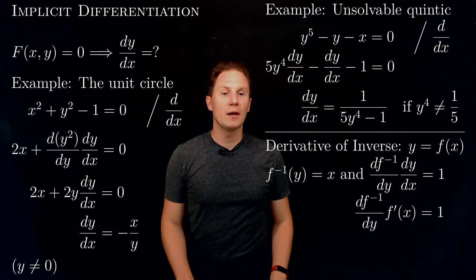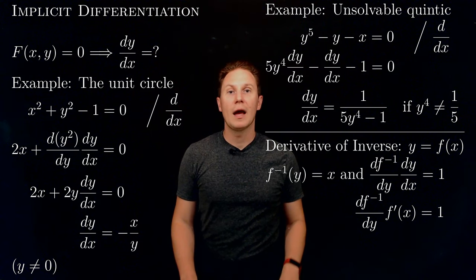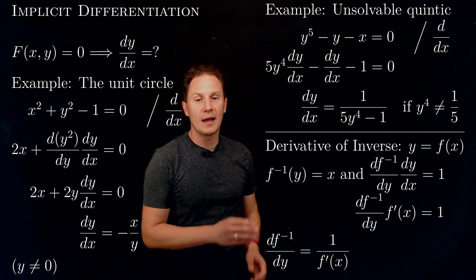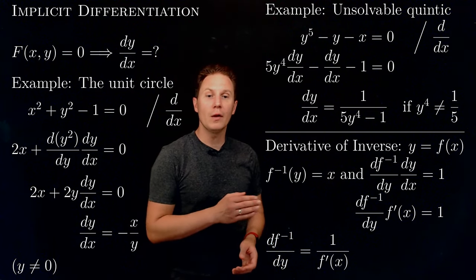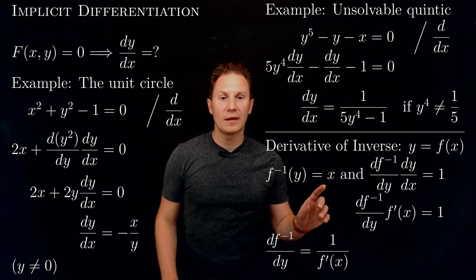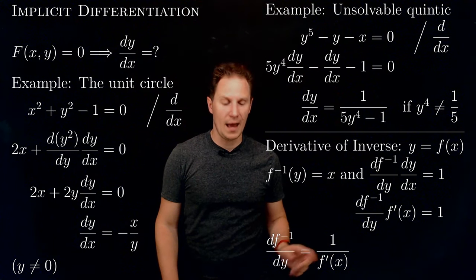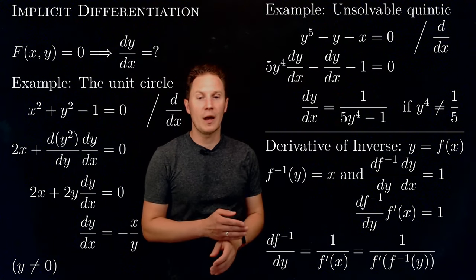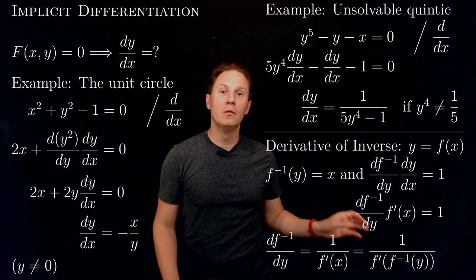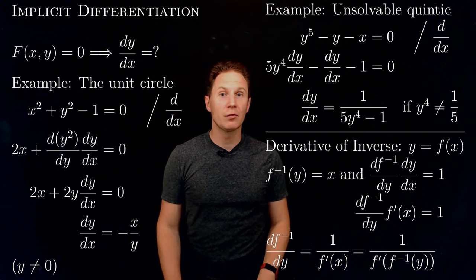Using prime notation, the derivative of f⁻¹ with respect to y times f′(x) equals 1. Dividing both sides by f′(x), we get that the derivative of f⁻¹ with respect to y is 1 over f′(x). Since x is nothing but f⁻¹(y), we can substitute to get the derivative of f⁻¹ with respect to y equals 1 divided by f′ evaluated at f⁻¹(y). This is how you find the derivatives of inverse functions.